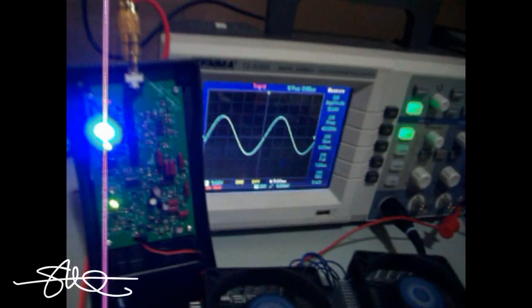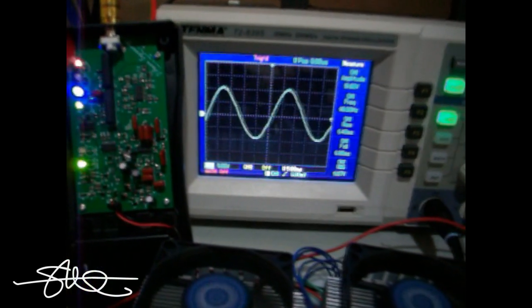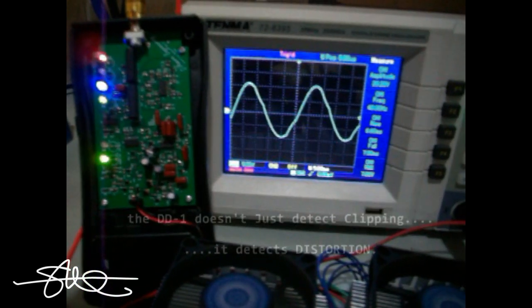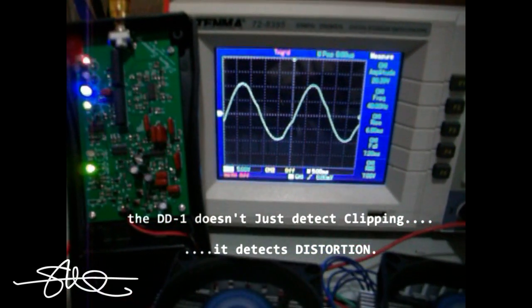But watch what happens when I turn on the bass. I turn the bass up just to illustrate what could happen. You can see it's getting bigger as I'm turning the bass up, turning the bass up, and right about there you see the distortion detector light on. And you can see the distortion in the scope.